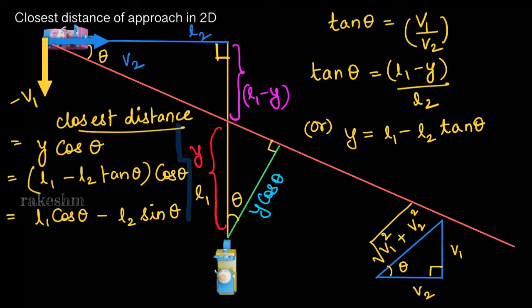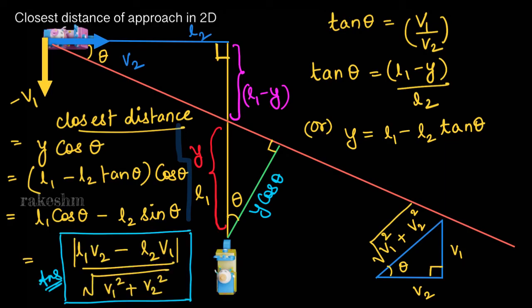The closest distance is y·cos theta, where y equals l1 minus l2·tan theta. Taking cos theta inside the bracket, we get l1·cos theta minus l2·tan theta·cos theta, which simplifies to l1·cos theta minus l2·sin theta. Substituting cos theta as v2 over root(v1² + v2²) and sin theta as v1 over root(v1² + v2²), the final closest distance is (l1·v2 minus l2·v1) divided by root over v1 squared plus v2 squared.